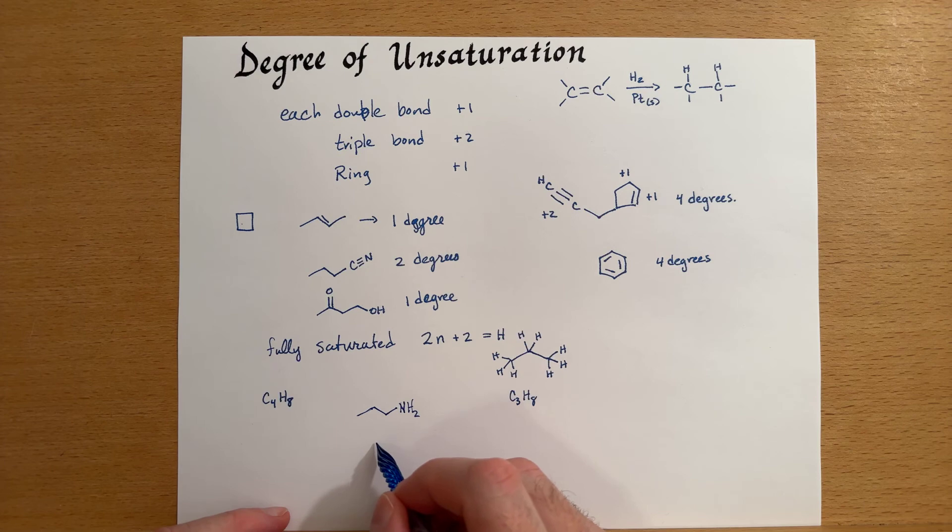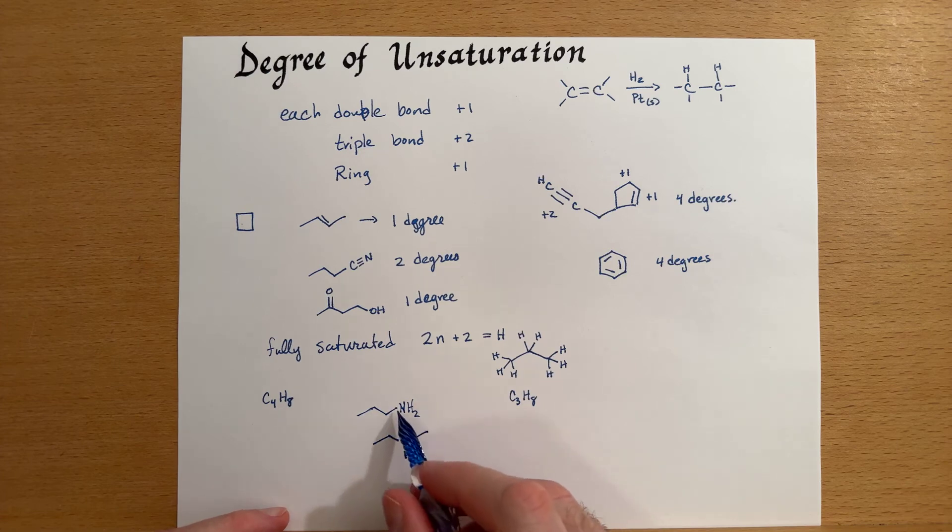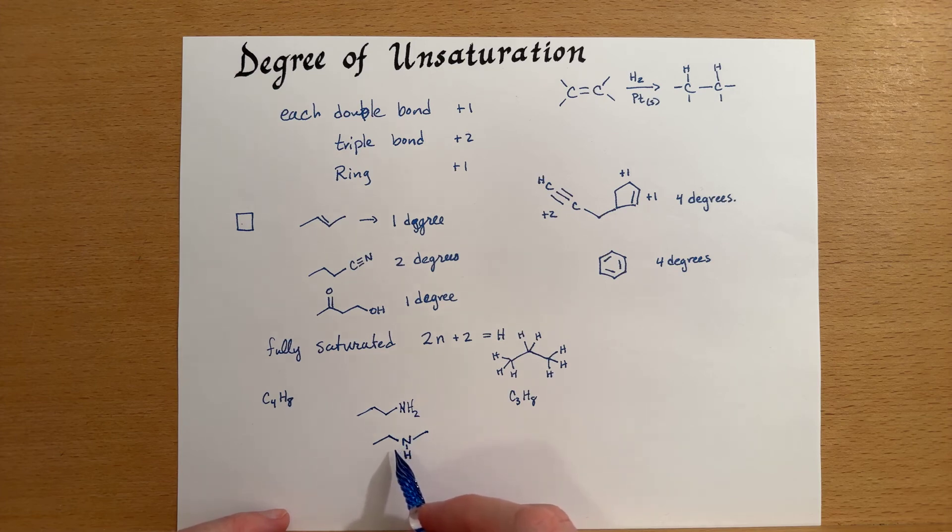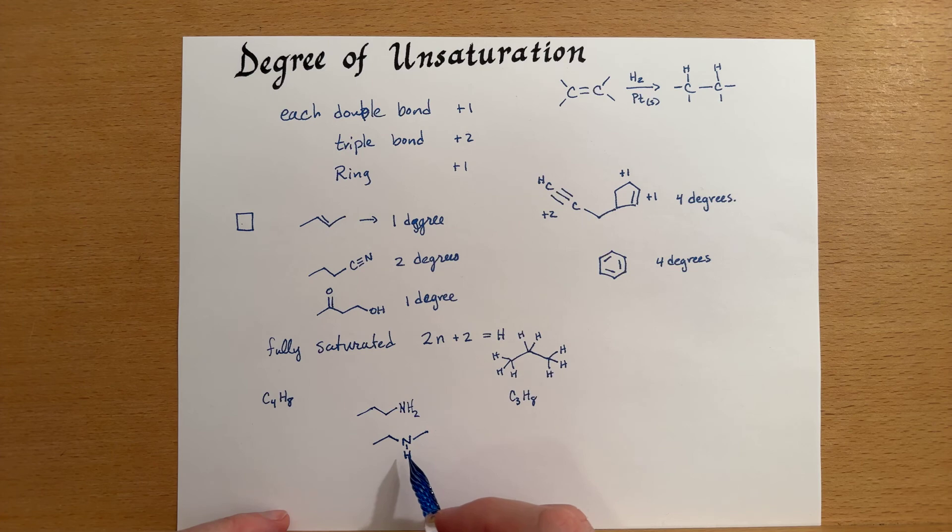And we can also look at other forms, which is a constitutional isomer. So we've just moved the nitrogen's position to in the middle of the chain. And again, these are both fully saturated.